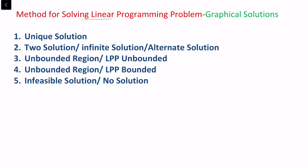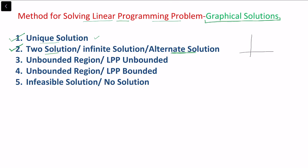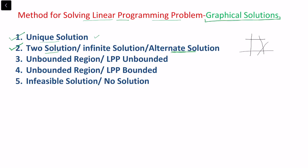In this video I will be solving linear programming problems using the graphical method. In my last video we took some questions on graphical solutions and discussed the first two cases. When solving a linear programming problem, we can find a unique solution when the region is bounded. In the second case, it was also possible that there are two alternate solutions, and the line segment joining these two optimal points also gives the optimal solution.